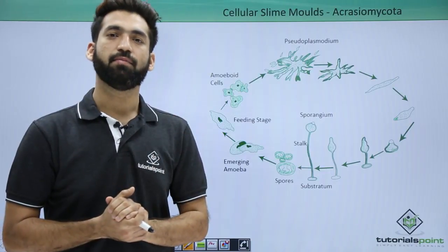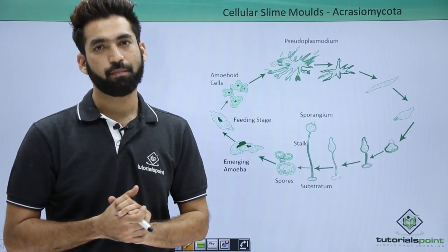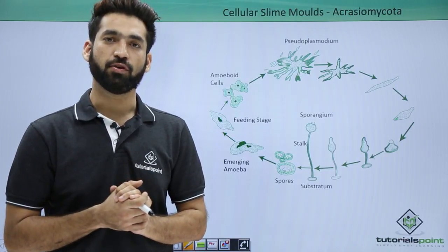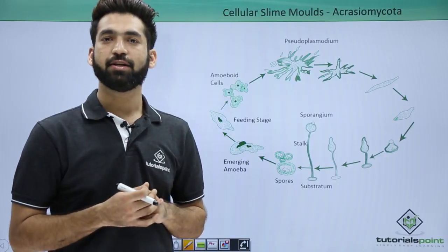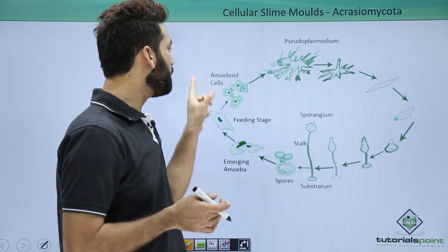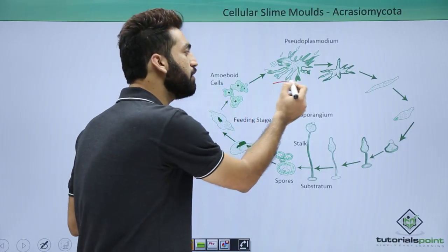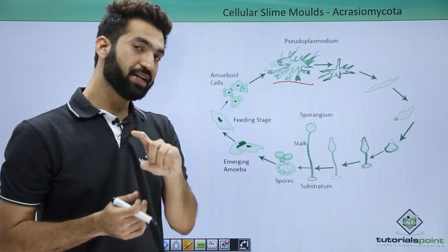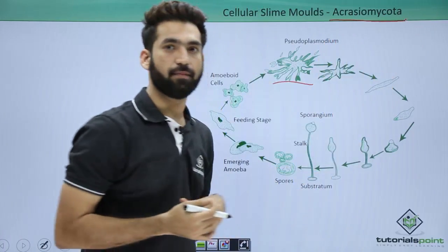Apart from acrasin, cAMP — cyclic adenosine monophosphate — also comes into effect. Because of the presence of cAMP and acrasin, most of the amoeboid cells come close together and form a pseudoplasmodium-like structure. Because of the presence of acrasin, these organisms are called Acrasiomycota.